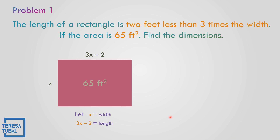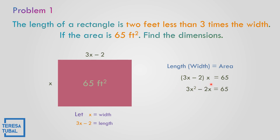And then the area is 65 square feet. So let us identify the dimension. The formula for the rectangle is length times width. So let us replace the length, which is equal to 3x minus 2, and the width is equal to x. The area is equal to 65. So let us multiply: 3x times x is 3x squared. Negative 2 times x is negative 2x, equals 65.